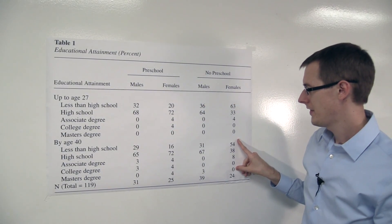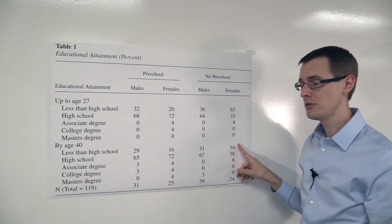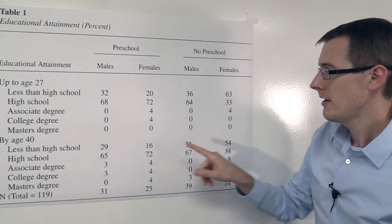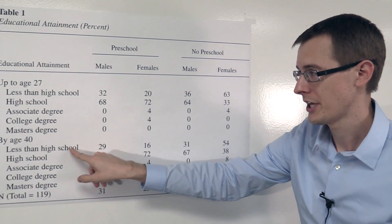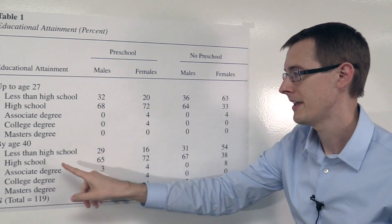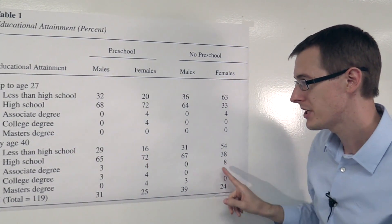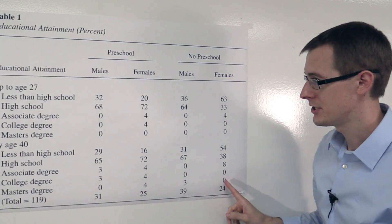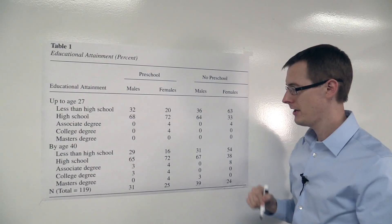Now let's look at the control group. These are females who did not get any preschool. 54% of them had less than high school education by the time they were 40, 38% had high school education by the time they were 40, 8% had an associate degree, 0% had a college degree, and 0% had a master's degree.